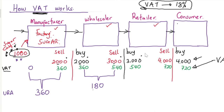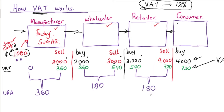For the retailer, same story: the retailer collected 720 in VAT when selling, but paid 540 to the wholesaler when purchasing. So the VAT to pay to government is 720 minus 540, which equals 180. The retailer also pays 180 in VAT to government.